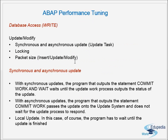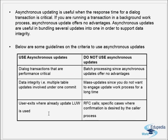In this performance tuning part 7b, we discussed the three areas for write queries to the database — updates or modifications. The first is synchronous and asynchronous updates: synchronous uses 'COMMIT WORK AND WAIT', asynchronous uses only 'COMMIT WORK' where the dialog work process doesn't wait for the update work process. The third type is local update. We also covered where to use and where not to use asynchronous updates.